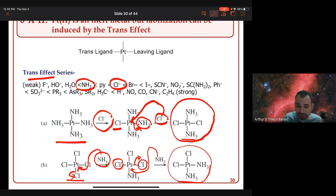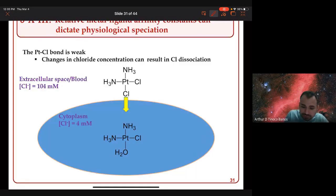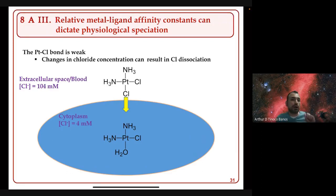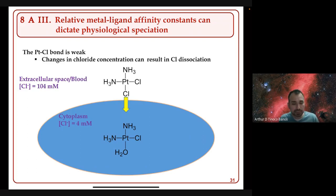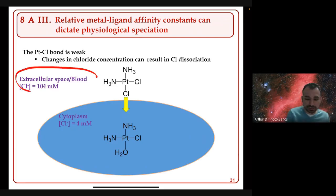Stability also plays a role. Relative metal-ligand affinity constants can dictate physiological speciation. With cisplatin, the platinum-chloride bond is weak, and the concentration of chloride in biological fluids affects whether the chloro groups remain coordinated to platinum or dissociate. In the extracellular space, in blood, the chloride concentration can affect this equilibrium.